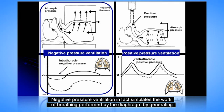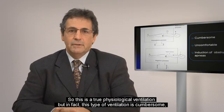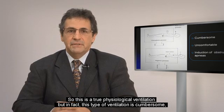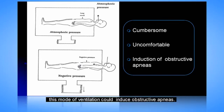Negative pressure ventilation simulates the work of breathing performed by the diaphragm by generating negative pressure via a device placed outside the thoracic cage of the patient. So this is a truly physiological ventilation, but this type of ventilation is cumbersome and uncomfortable. Because there is a synchrony between the negative pressure generated by the diaphragm and the upper airway muscles, this mode of ventilation could induce obstructive apneas.